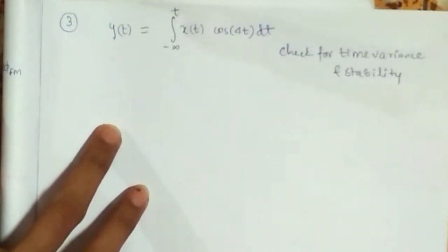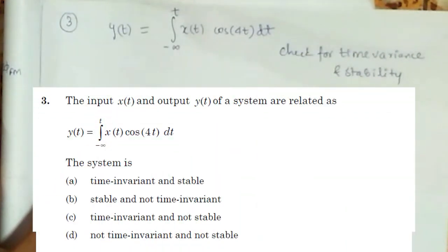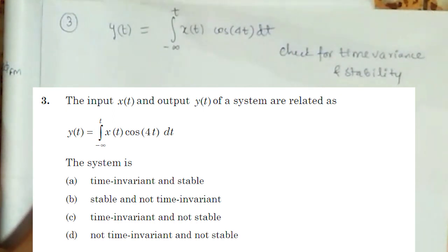Hello friends, welcome to Gadea. In this question we have given a signal y(t) equal to the integral from minus infinity to t of x(τ) times cos(4τ) dτ, and we have to check the time variance and stability of this system.